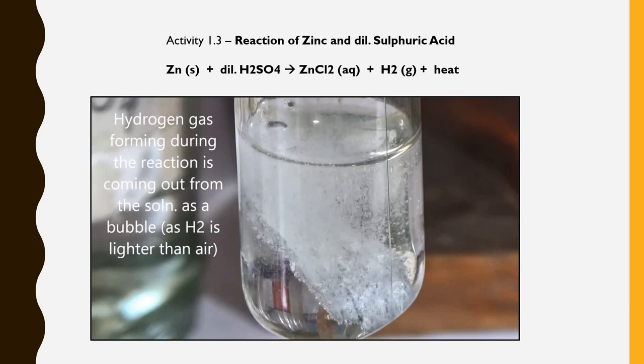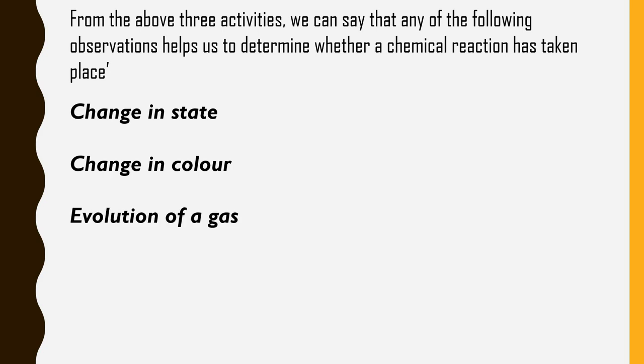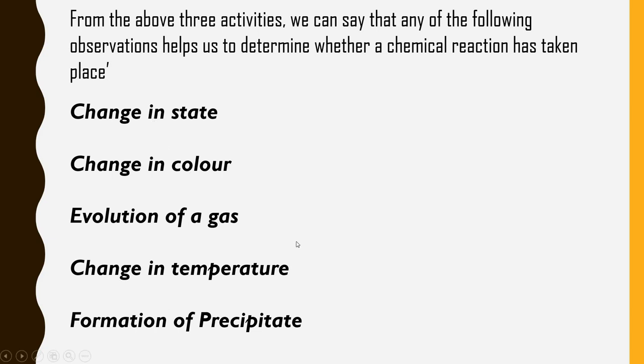So in all these cases what we infer that we can determine whether a chemical reaction has taken place by these observations which we have seen. So the observable changes to identify that chemical reaction has taken place are change in state, change in color, evolution of gas, change in temperature and formation of precipitate. So if any of these change occurs or is observed then we say that there is a chemical reaction taking place.